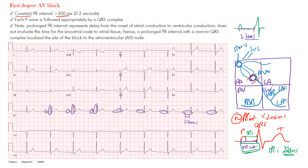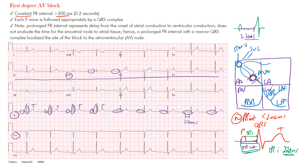You always want to look at the beginning of the P wave to the beginning of the QRS complex. The best leads I find most helpful are the rhythm strips, V2 and V1. In some leads like AVL, you may not even see a P wave, so focus on one lead and look across. Make sure there are no dropped beats and notice there's always a P wave associated with the QRS complex. Remember, a prolonged PR interval represents delay from the onset of atrial conduction to ventricular conduction — it does not evaluate the sinoatrial node to atrial tissue, as we saw with previous sinus exit blocks.